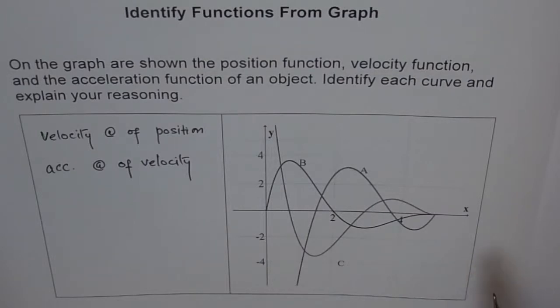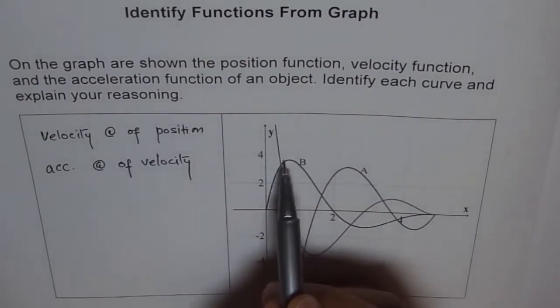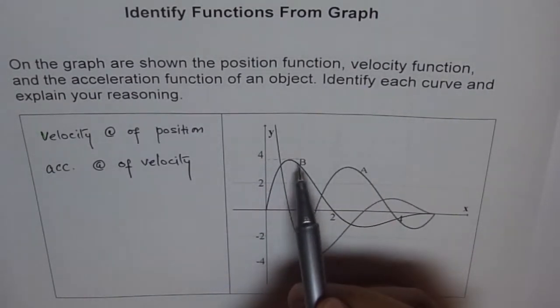The tangent line with slope of zero is normally at the turning point. So when we go forward here, we see on B there is one here - a turning point.